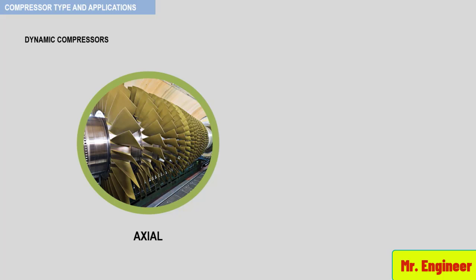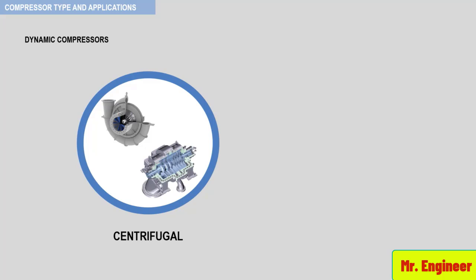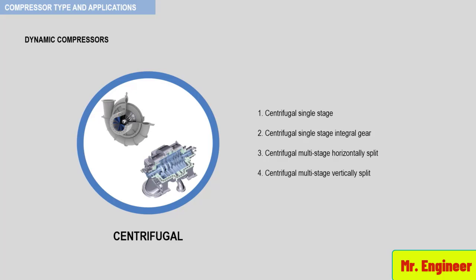You can find various types of centrifugal compressors based on their designs and configurations. Among them, we can name centrifugal single-stage compressors, centrifugal single-stage integral-gear compressors, centrifugal multi-stage horizontally split compressors, and centrifugal multi-stage vertically split compressors.